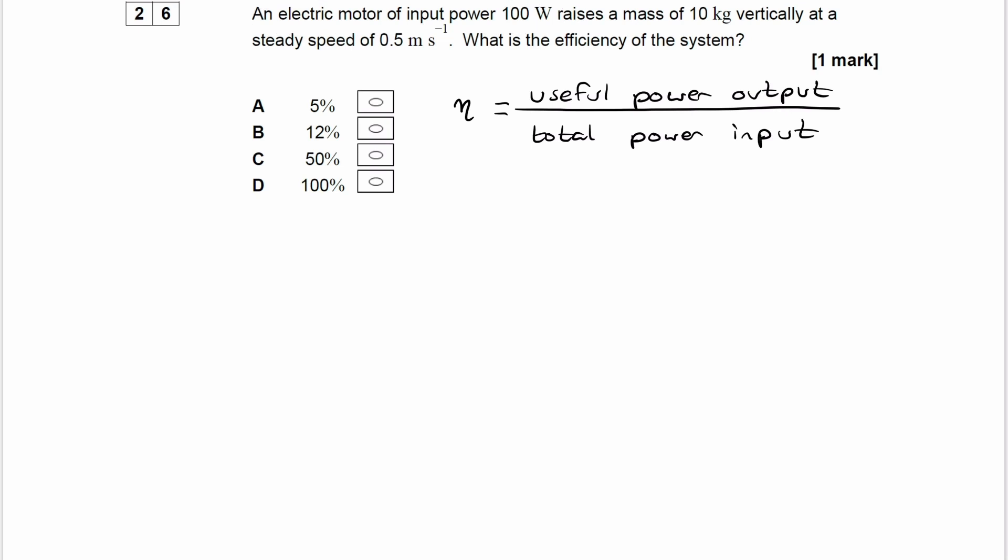So what is the useful energy in this case? What is the useful power? Is it kinetic energy? Is it gravitational potential energy? Well, if we look at the question, it says that the mass is being raised at a steady speed of 0.5. So the kinetic energy is not actually changing. Kinetic energy is staying constant. So this motor is not transferring energy to kinetic energy because that's staying constant. But because we are raising the mass, we must therefore be gaining gravitational potential energy. And this must then be the useful energy output.